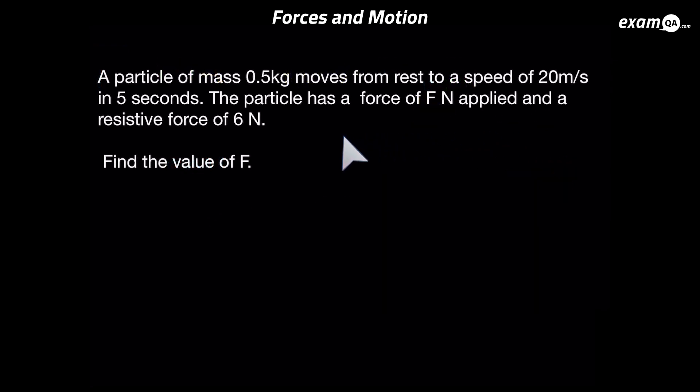Okay, so let's have a look at this question. Take a moment and read it. We've got a particle of mass 0.5 kg that starts at rest and speeds up to 20 meters per second in five seconds. We also know the particle has a force F Newtons applied to it and a resistive force of six Newtons. We need to find the value of that unknown force F Newtons. So let's start with a little diagram. We've got a particle there. There's two forces we need to put on. We'll put F to the right and the resistive force to the left. So these are our forces on the diagram.